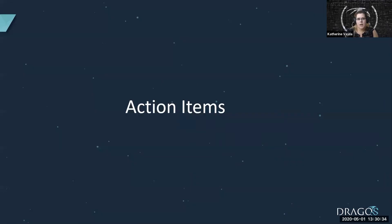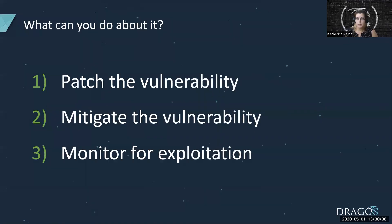There are several options or potential courses of action when dealing with vulnerabilities. First, you can patch the vulnerability, provided the vendor has a patch — though patches could introduce new vulnerabilities or, as we've seen, not actually mitigate the vulnerability. Second, you can mitigate the vulnerability in other ways, such as restricting access to the vulnerable component or disabling vulnerable services you aren't using. And lastly, you can monitor the network and host for exploitation of these vulnerabilities.